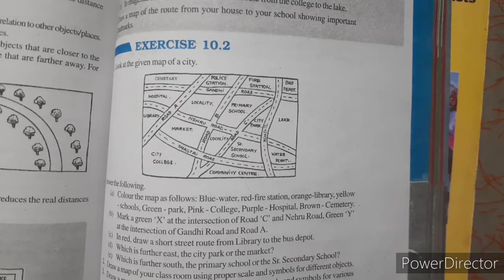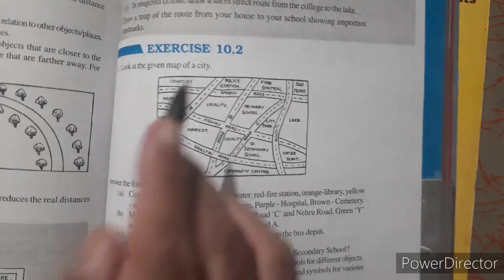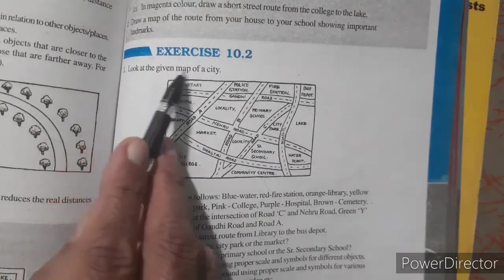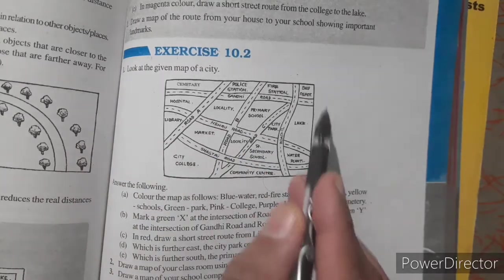Hello student. Chapter number 10, Visualizing Solid Shapes. In that, Exercise 10.2. First question. Look at the given map of city. Here the map of city is given.